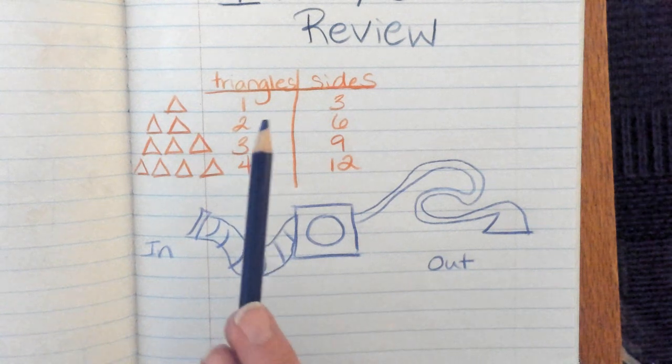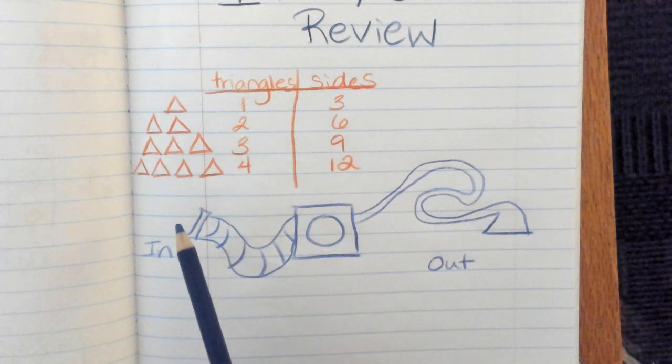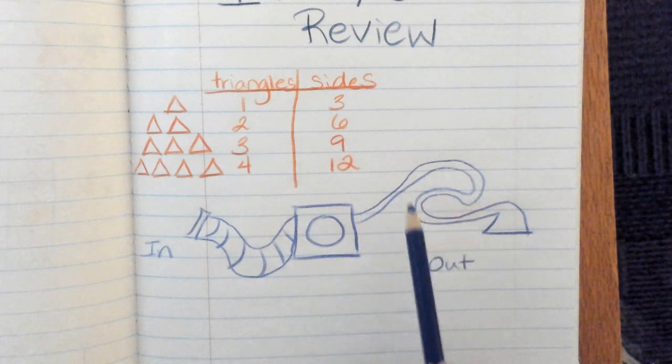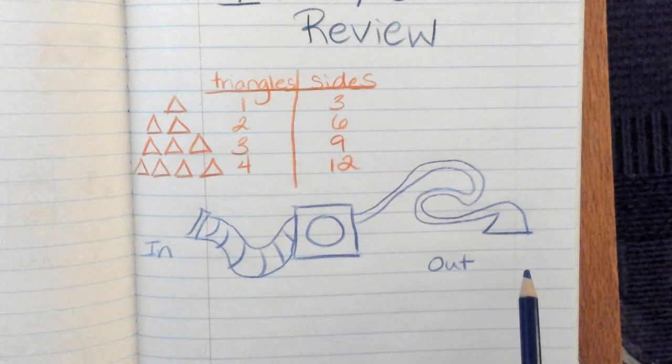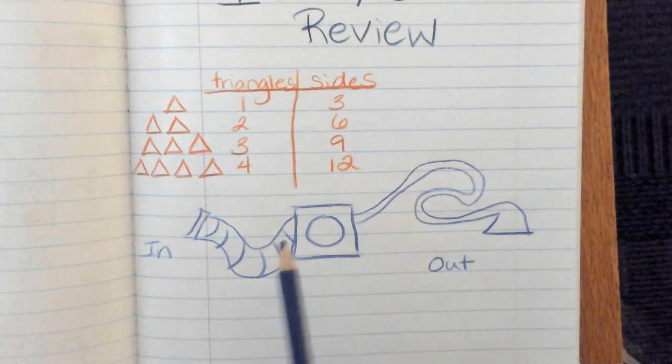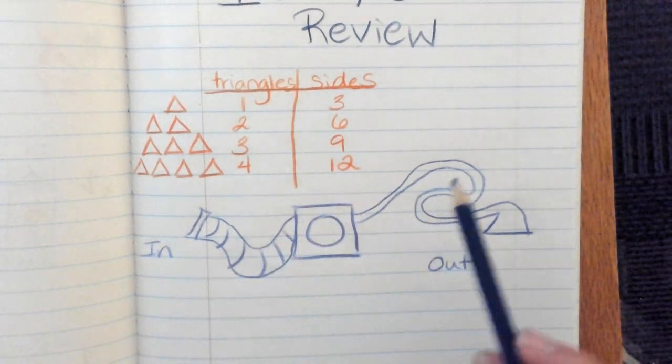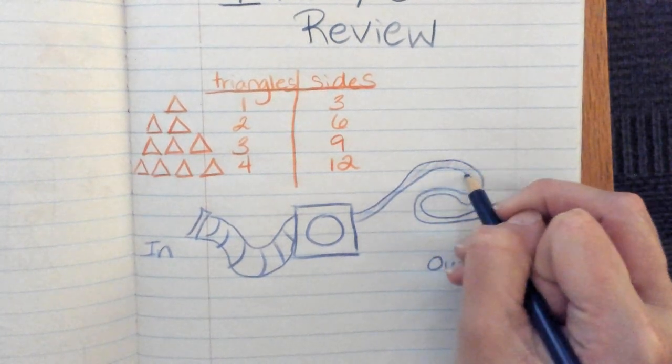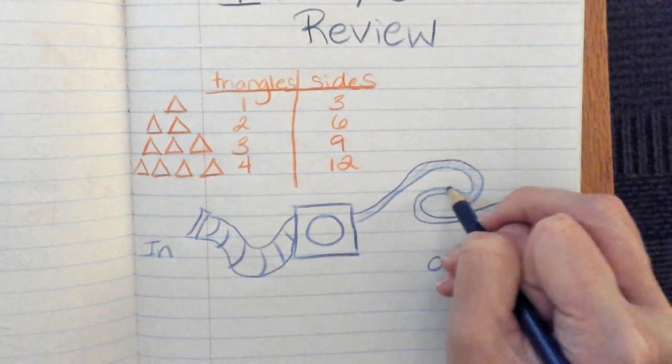And if you put the number 2 in, so two triangles, then you get the number 6 out.